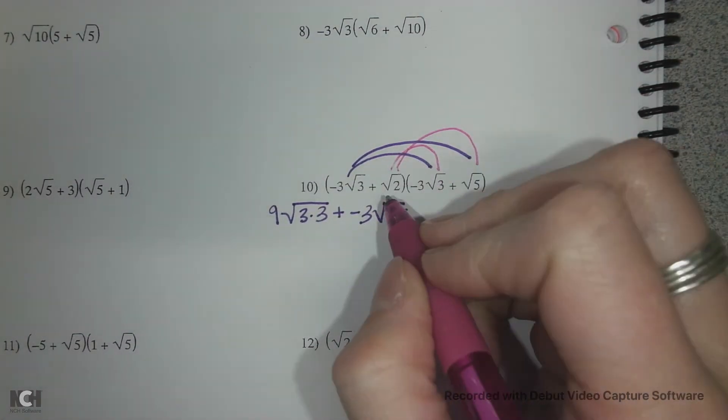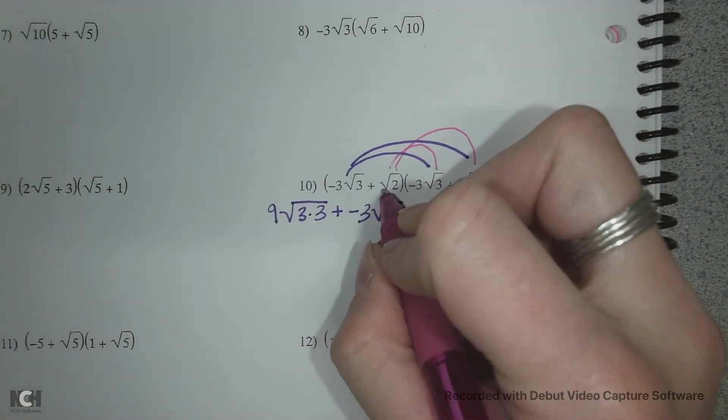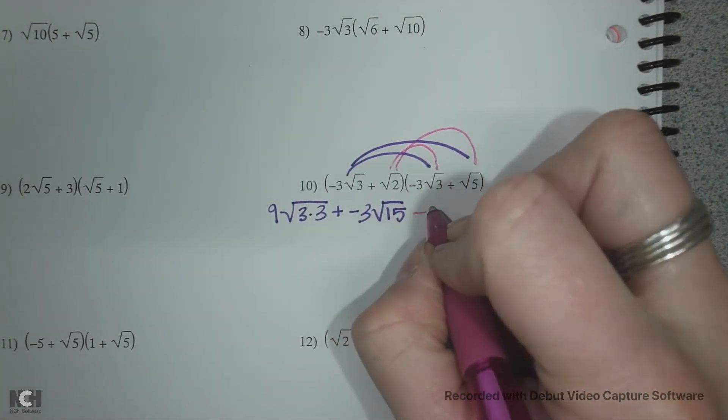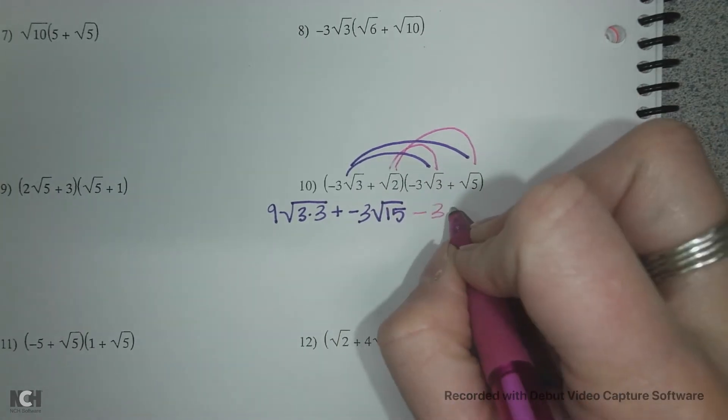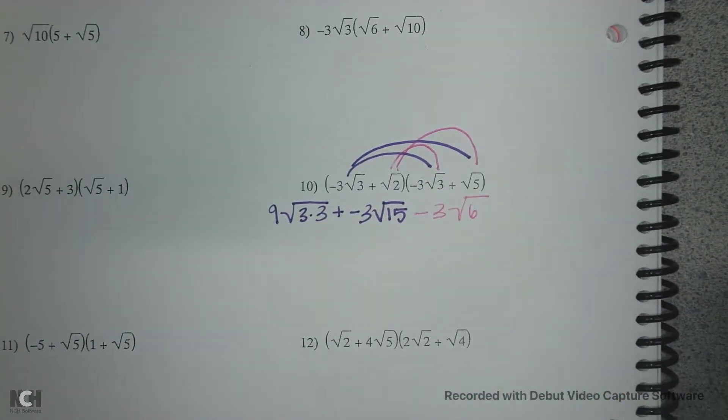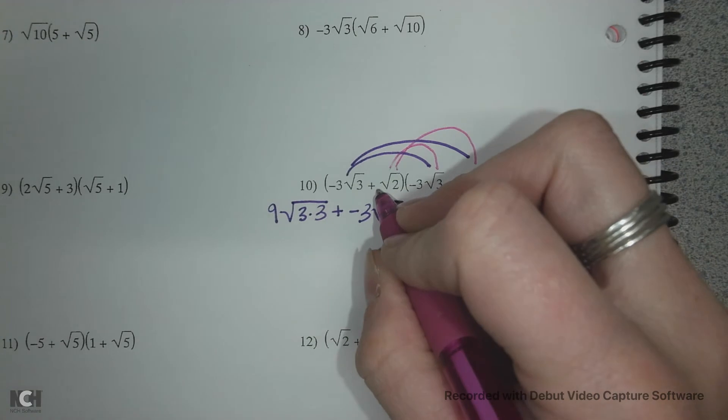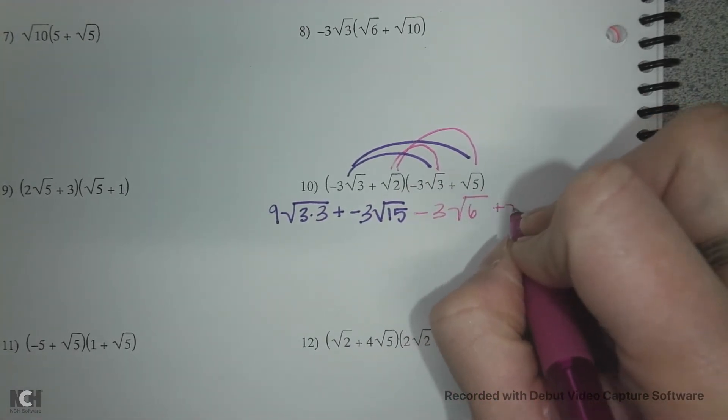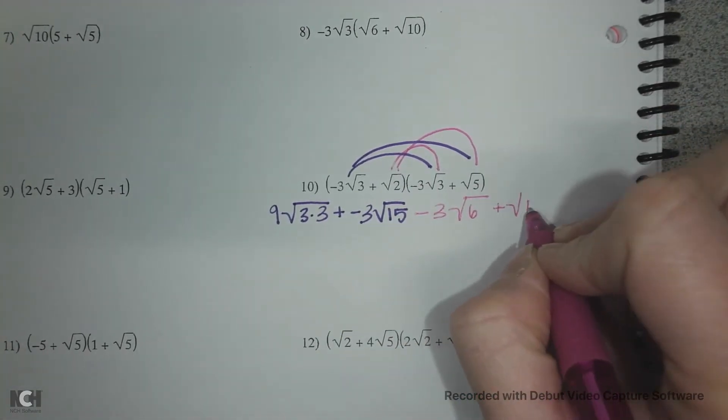And then for my second term, I'm going to multiply 1 by negative 3, and then root 2 by root 3 is root 6. Multiply those two numbers together. And then we have 1 times 1 which is 1, and then 2 times 5 is 10.